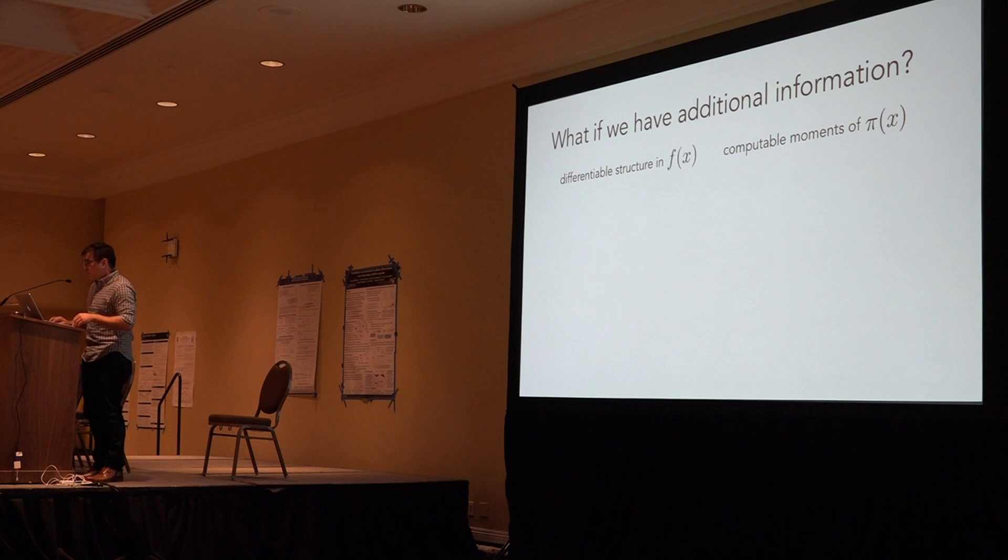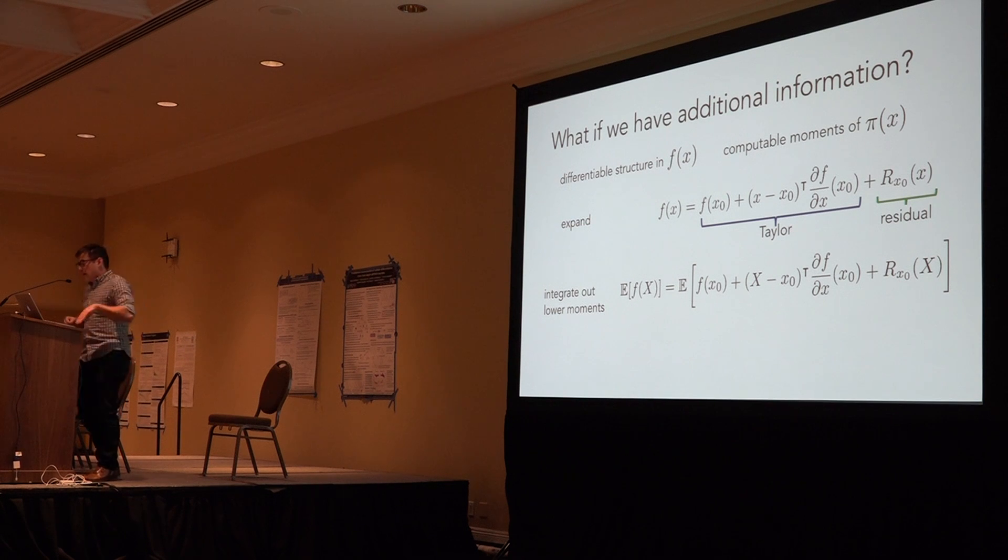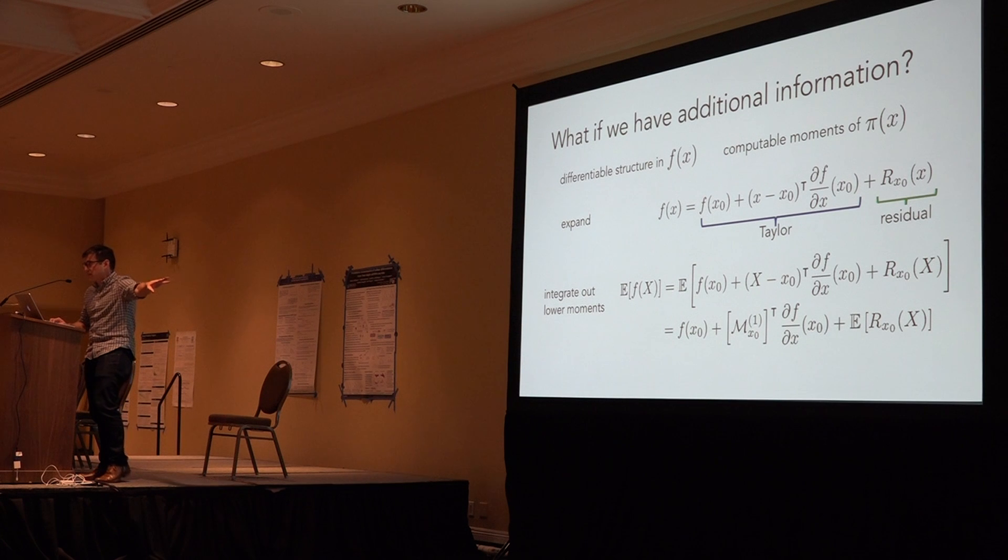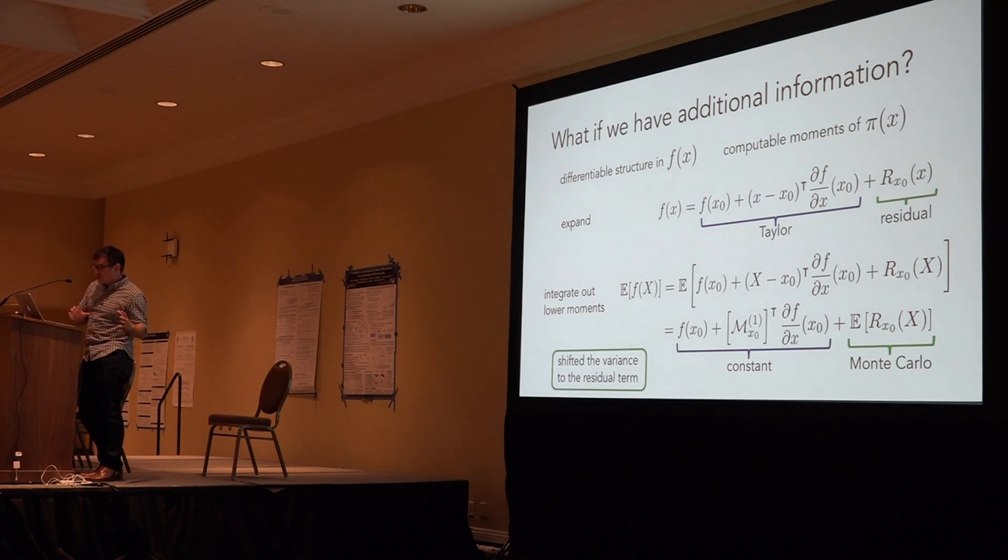With both of these assumptions, we can rearrange this Monte Carlo estimator. We take f and decompose it into two terms. We have a Taylor expansion, in this case the first order Taylor expansion about x0, and then we have this residual term. We take the expectation of this expanded f. Because we're assuming we can compute the first moment of the distribution, the Taylor expanded component of f can be computed exactly. So it turns into this moment times the first derivative. The residual term remains analytically intractable, but we can use Monte Carlo to estimate this particular term. It's still an unbiased estimator. This effectively shifts all of the variance into the residual term.